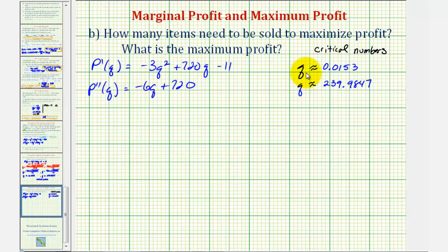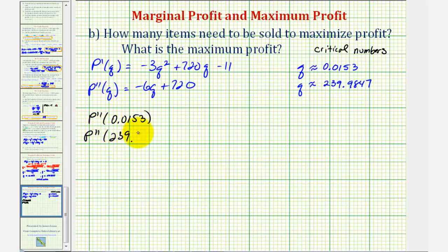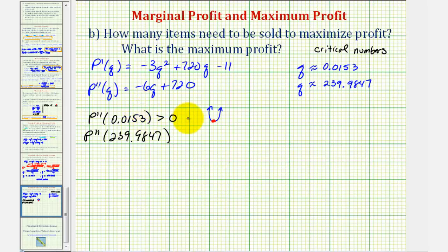We'll determine the sign of the second derivative at our critical numbers to see if the function is concave up or down, which tells us whether we have a maximum or minimum. At q approximately 0.0153, the second derivative is positive, meaning the function is concave up — so we have a minimum function value here. This is not the value we want since we're trying to maximize, not minimize, the profit.